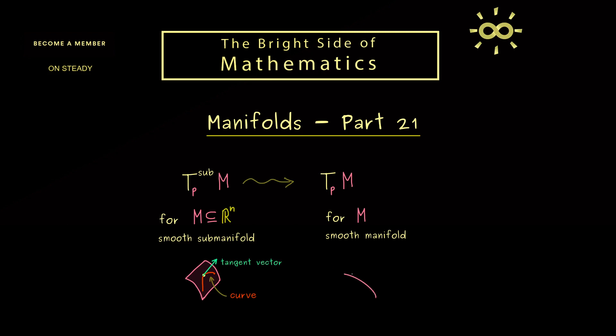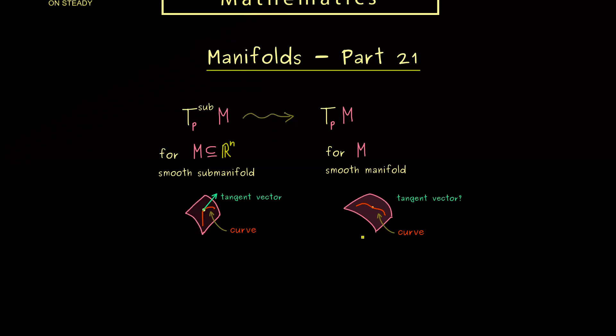However, on the right hand side here, there is no space around it, there is just the manifold itself. Therefore, the immediate question is, what is a good substitute for our R^n? Because otherwise everything looks the same, we have the point p and we can look at curves through p. The only problem there is, that the derivative does not make sense. Therefore, we see, it's not clear what this abstract tangent vector should be.